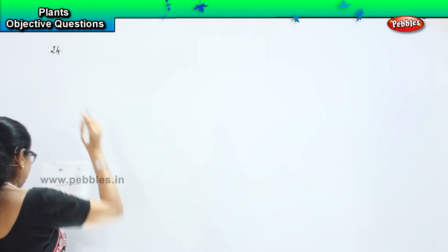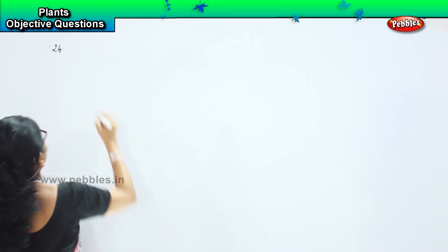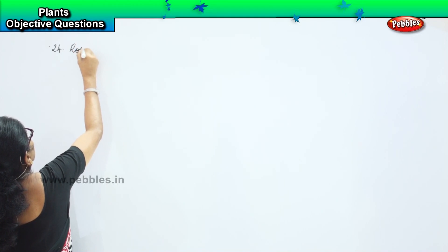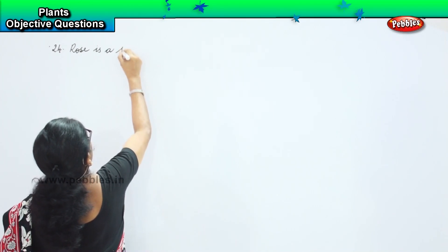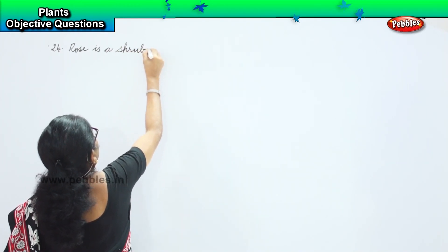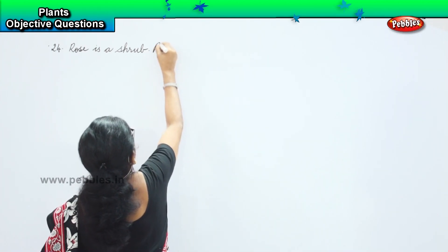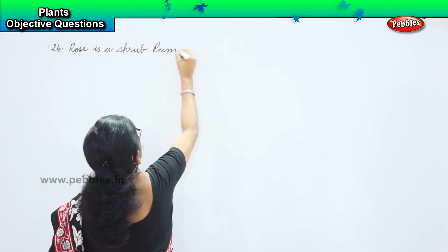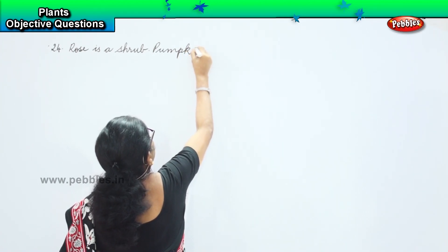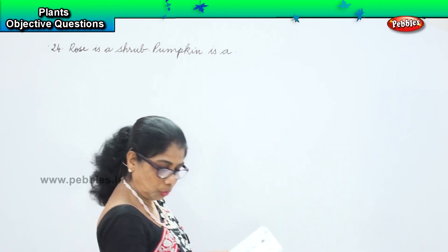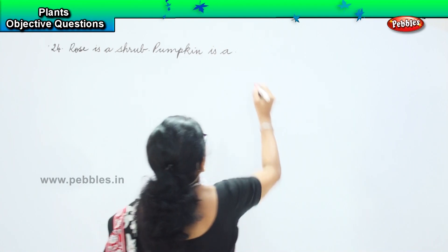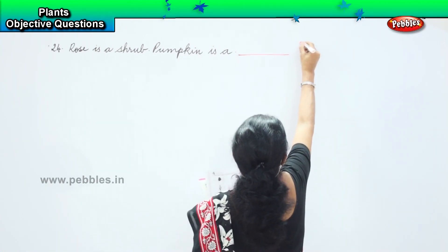Let us look at our twenty-fourth question. It says: Rose is a shrub. Then what is the pumpkin? That is what we have to find out.